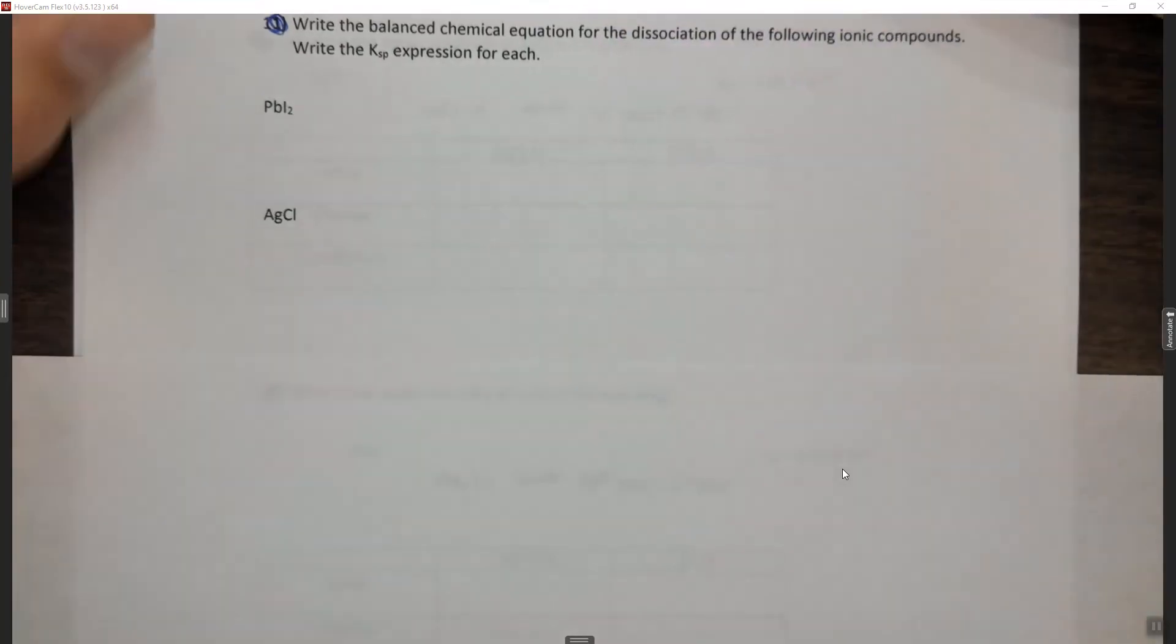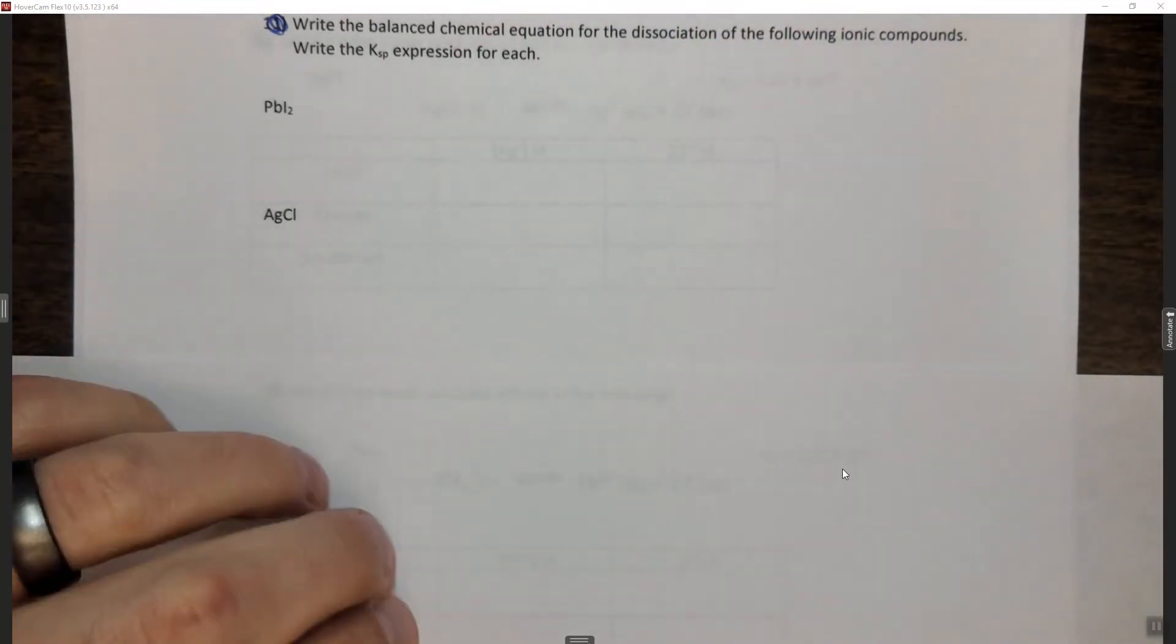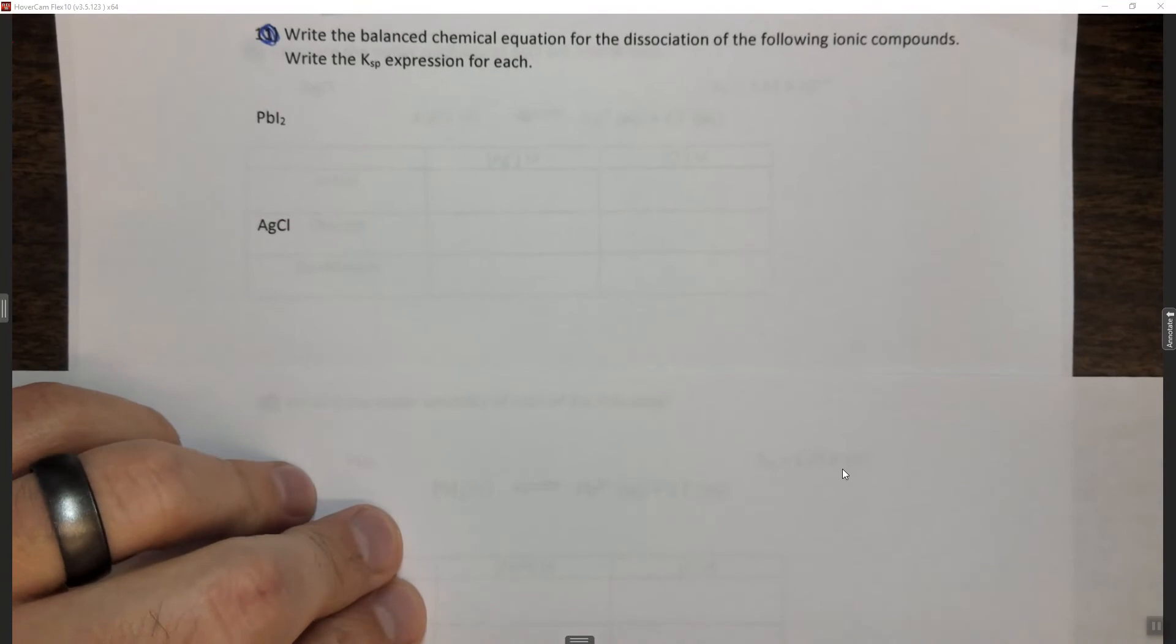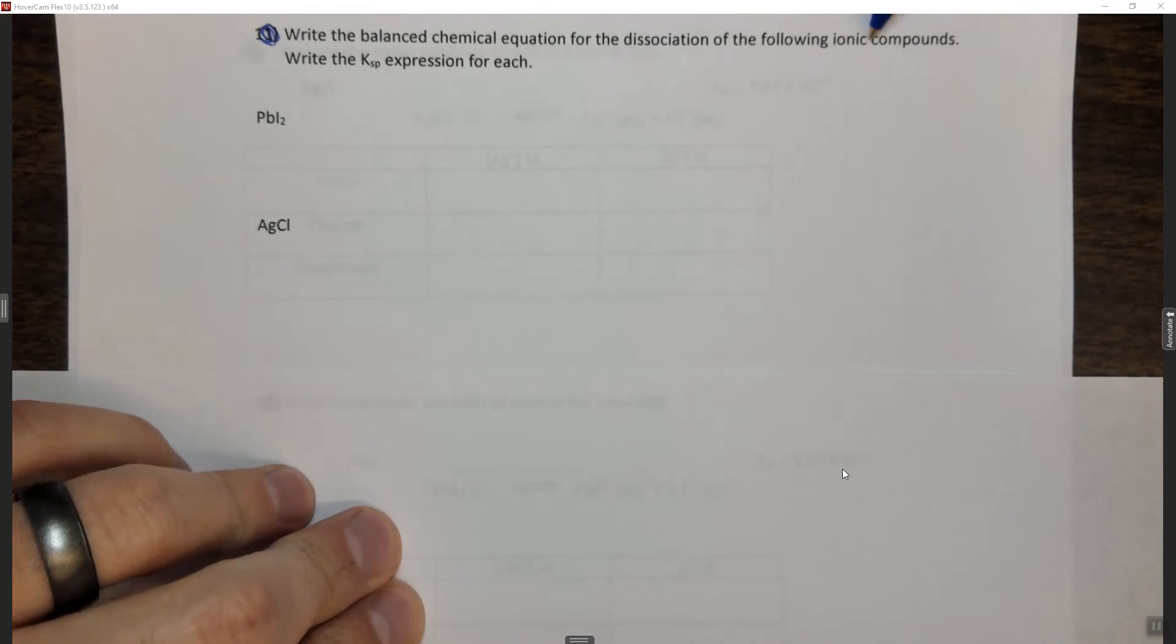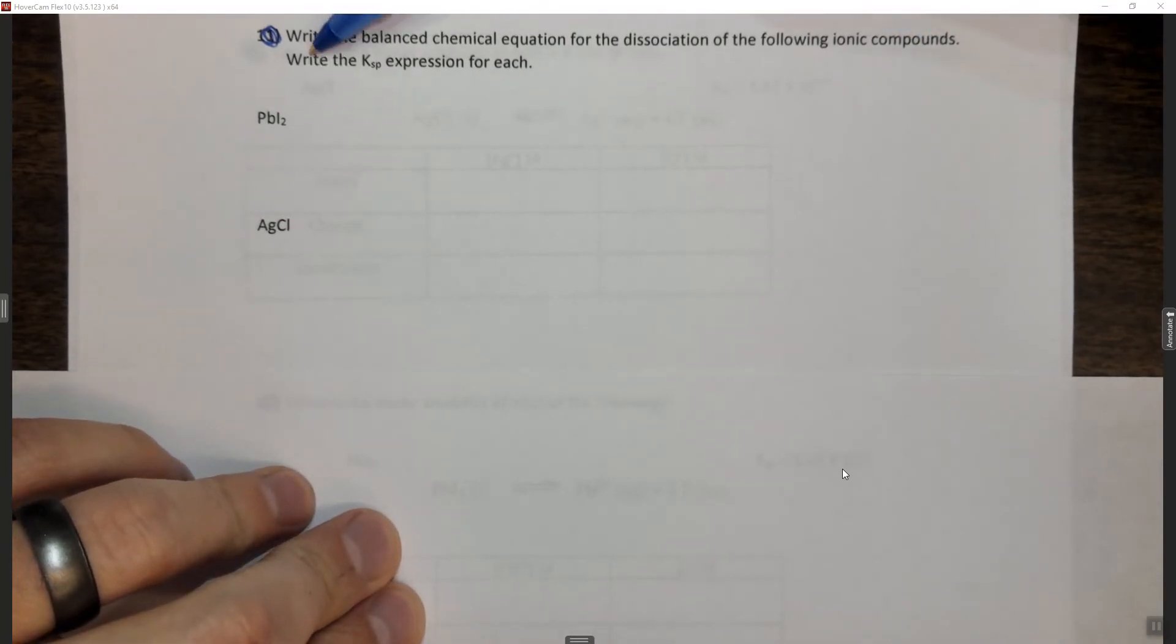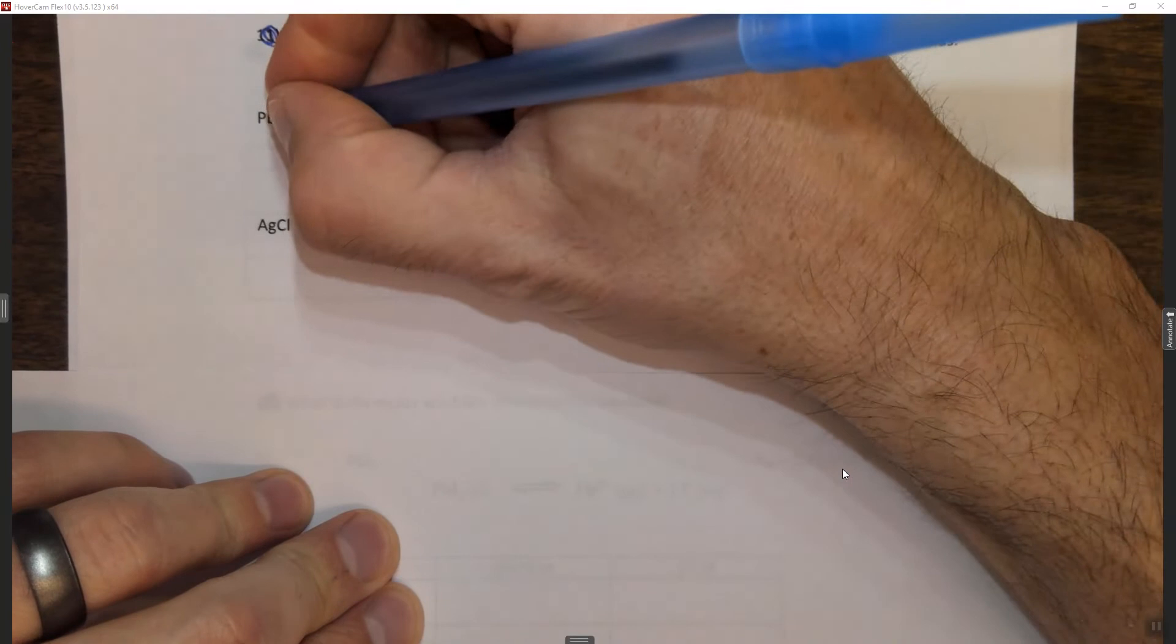In this question we're going to write the Ksp expression and use those expressions in the previous and subsequent questions. It says write the balanced chemical equation for the dissociation of the following ionic compounds. Write the expression for Ksp.